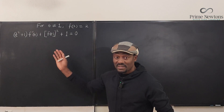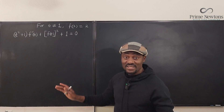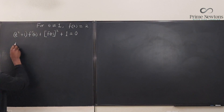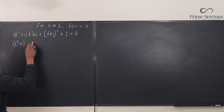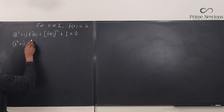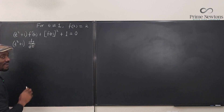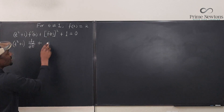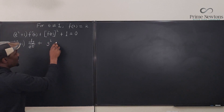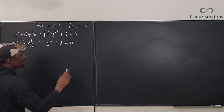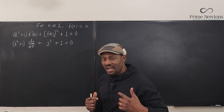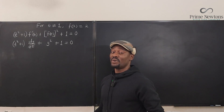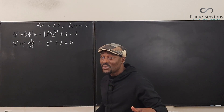What I'm going to do is rewrite this equation as (t² + 1) multiplied by y prime — and I'm going to write y prime as dy/dt. So now I can see it's a differential equation: (t² + 1)(dy/dt) + (y² + 1) = 0.